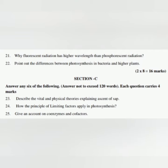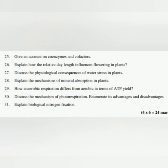Section C: Answer any six of the following. Answer not to exceed 120 words. Each question carries four marks. Question 23: Describe the vital and physical theories explaining ascent of sap. Question 24: How the principle of limiting factors apply in photosynthesis? Question 25: Give an account on coenzymes and cofactors.